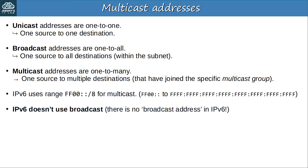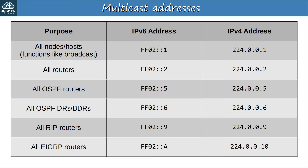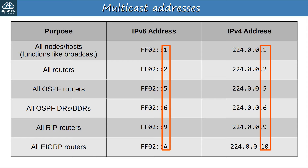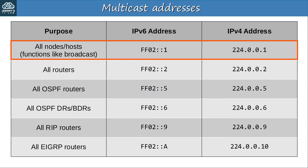Here's a chart of some important multicast addresses — both IPv6 and IPv4 versions — that you should know for the CCNA. The IPv4 and IPv6 versions use the same last digit. For example, the all-OSPF-routers multicast address is FF02::5 in IPv6 and 224.0.0.5 in IPv4. The all-EIGRP-routers address is FF02::A in IPv6 — hexadecimal A is 10 in decimal — and 224.0.0.10 in IPv4. The all-nodes (or all-hosts) multicast address functions like a broadcast, since it's destined for all hosts — that's how IPv6 performs broadcast-like behavior.